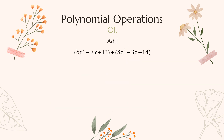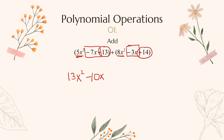Another addition example: find the highest exponent — that's x squared — and combine all x squareds. We have 5x squared plus 8x squared; five plus eight is 13, so we have 13x squared. Next, combine the regular x's: negative 7x and negative 3x gives negative 10x. Finally, the constants: 13 and 14 make 27. Written in standard form — highest exponent to lowest — this is the final answer.